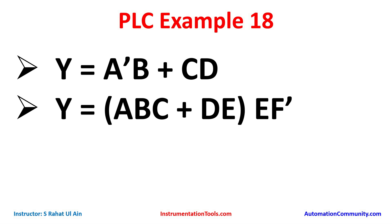For inputs B, C, and D we will use normally open contacts. So A as a normally closed contact and B as a normally open contact will be connected in series with each other, and C and D as normally open contacts will be connected in series but in parallel with A-not B.